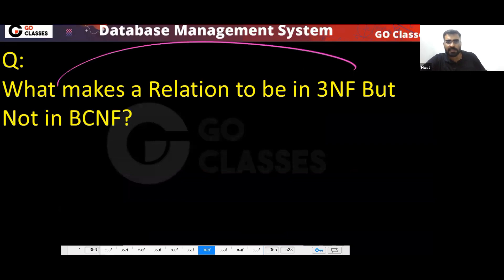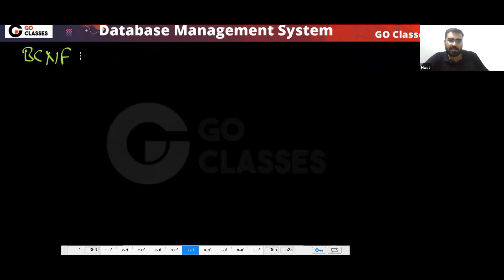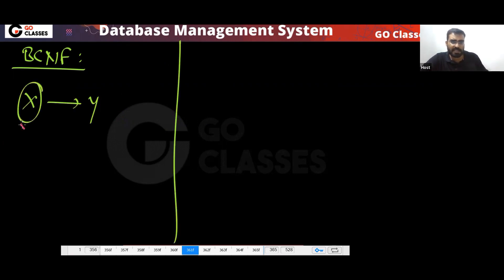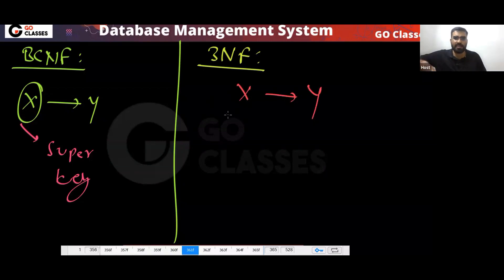What makes a relation in 3NF but not in BCNF? BCNF is saying that the LHS should be a super key. What is 3NF saying? 3NF is saying that either the LHS should be a super key or the RHS should be a prime attribute.